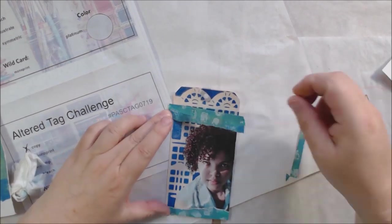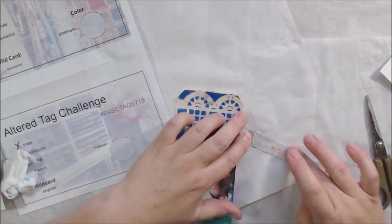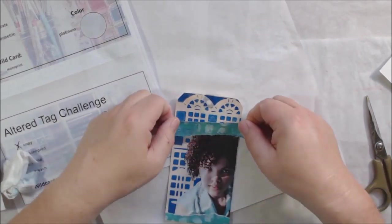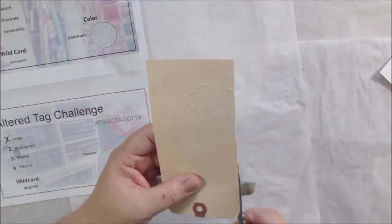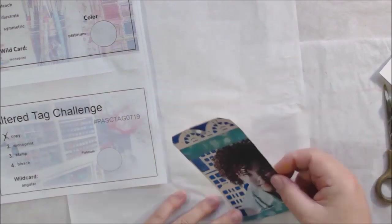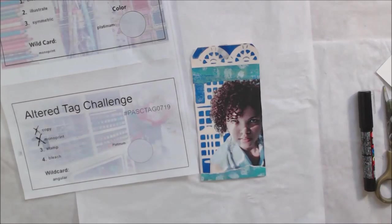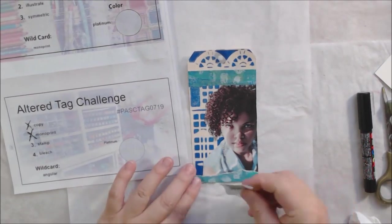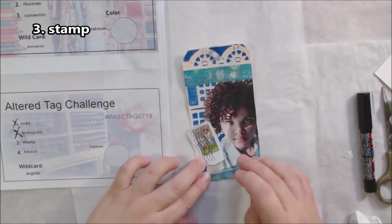Then I have this other monoprint that I wanted to use, a couple scraps just to make it more interesting visually. I put a couple torn scraps on there from that monoprint. So that covers the prompt monoprint - I have used monoprints.